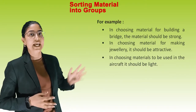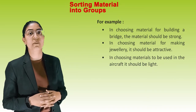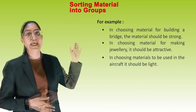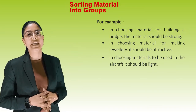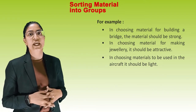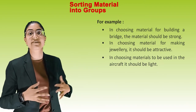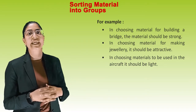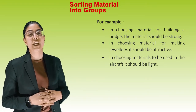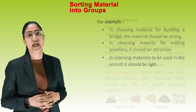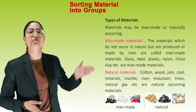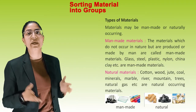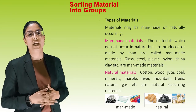For example, in choosing material for building a bridge, the material should be strong. In choosing material for making jewelry, it should be attractive. In choosing material to be used in aircraft, it should be light. Materials may be man-made or naturally occurring.